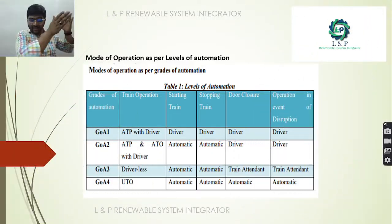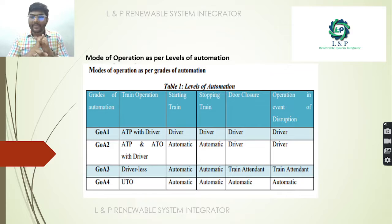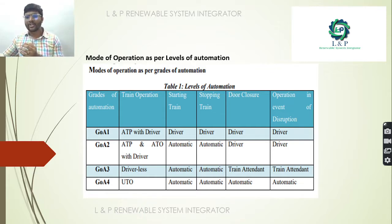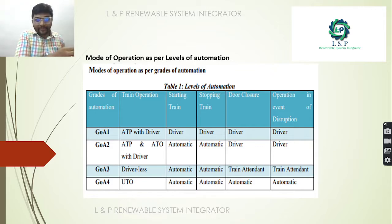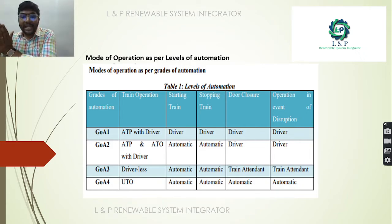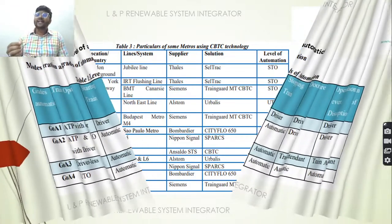This table shows different modes of operation per grade of automation. GOA1: ATP with driver — driver required for starting, stopping, door closing, and disruptions. GOA2: ATP and ATO with driver — starting and stopping automatic, driver needed for door closure and disruption handling. GOA3: driverless — starting and stopping automatic, train attendant needed for door closure and emergencies. GOA4: UTO — starting, stopping, door closure, and emergency handling are all fully automatic.